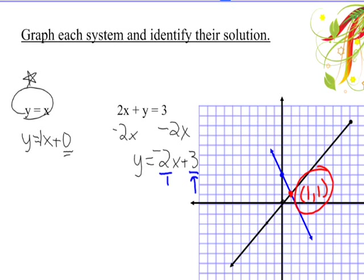We see where they intersect right here at the point (1, 1). This is the point that should work in both equations. Let's check the first one. Does it work? If I plug it in, I get 1 equals 1. Is that a true statement? Sure.